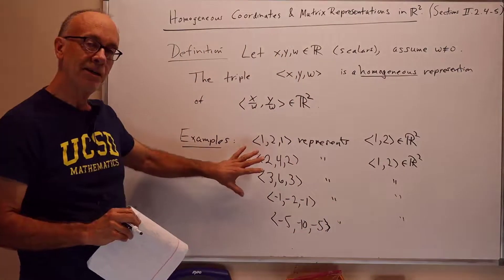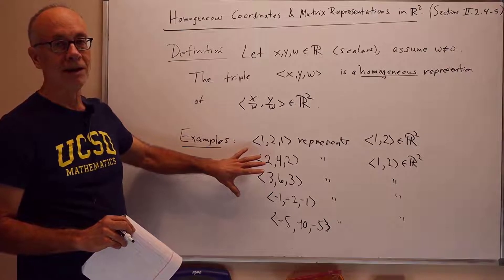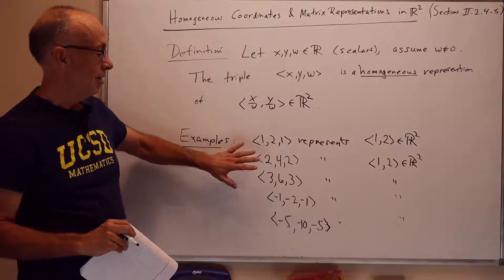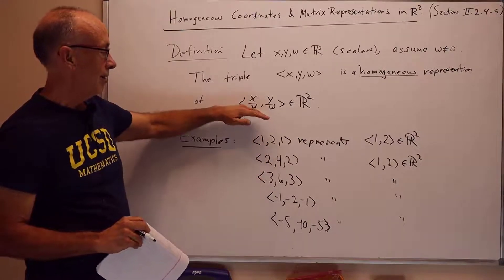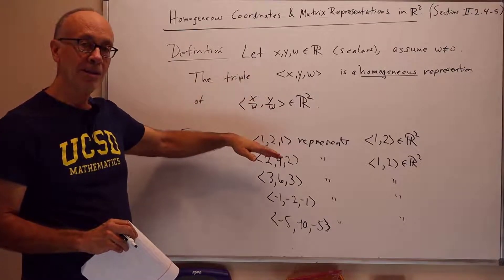So, any time we multiply all three values by a non-zero number, it changes everything proportionally, and the ratios, x over w, y over w, stay the same.